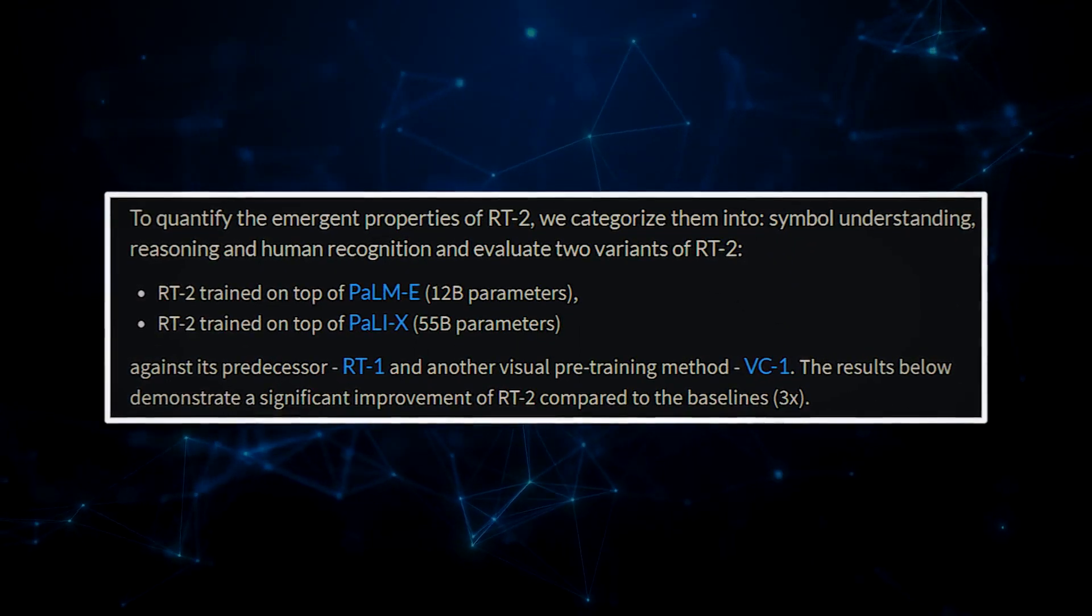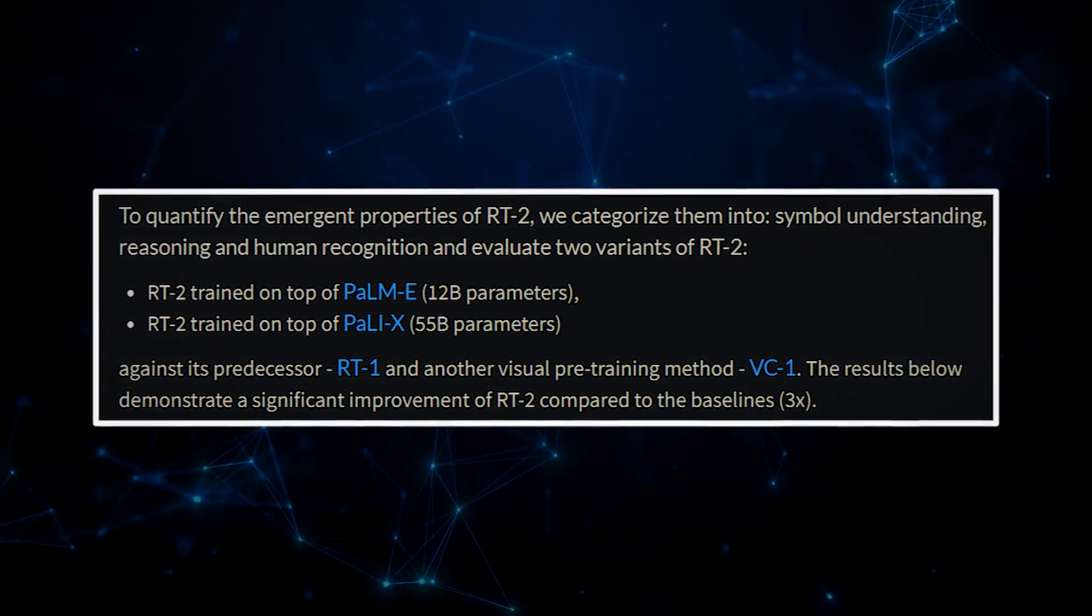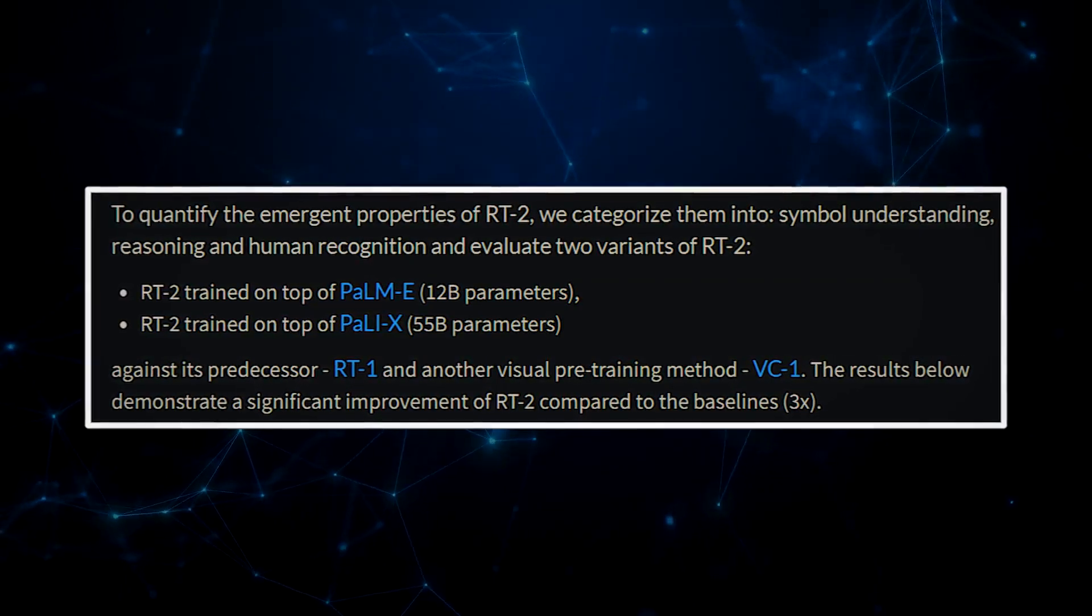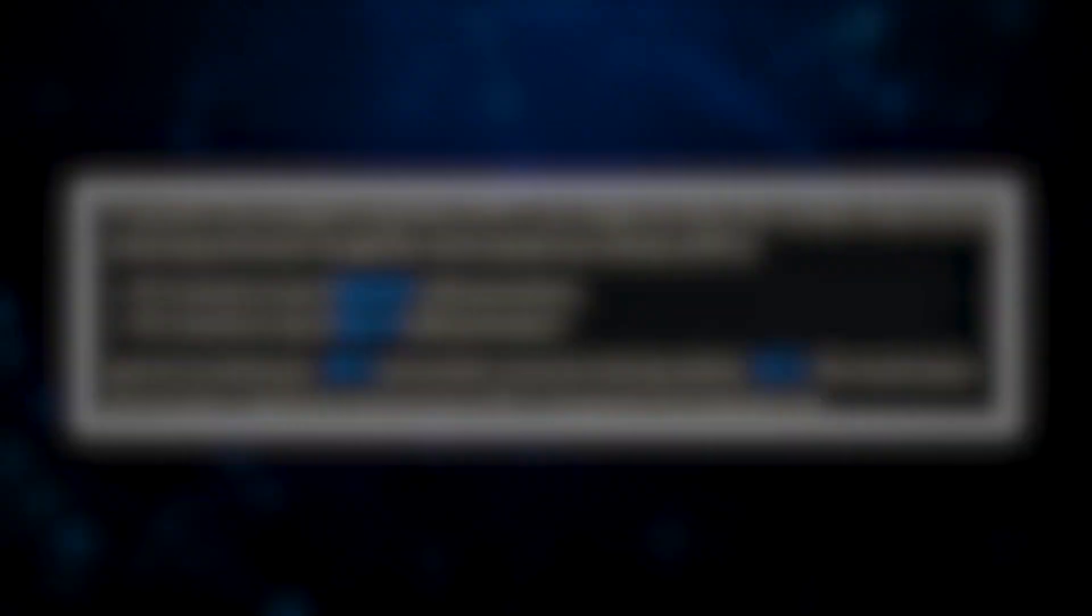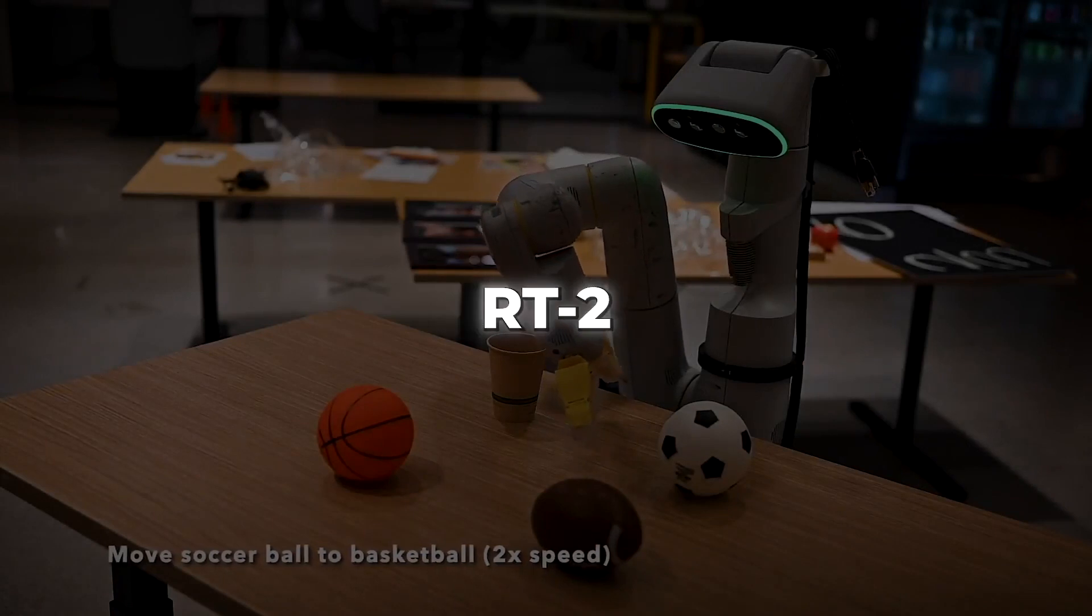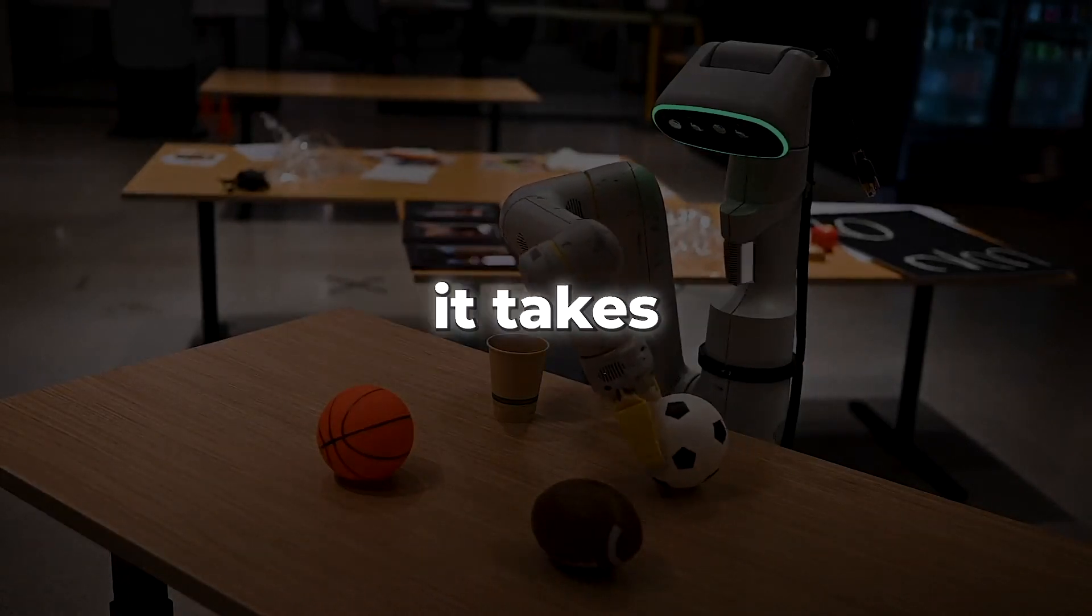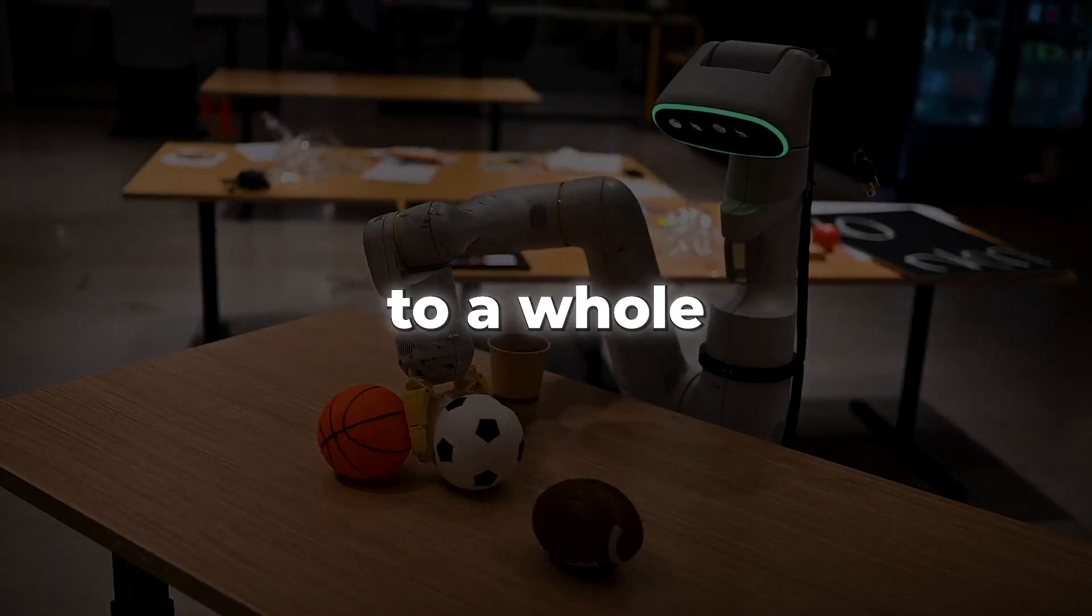The futuristic wonder brings together not one but two instantiations of VLAs, the powerful Palm-E and the genius Pali-X. But here's another real kicker, RT2 doesn't stop there, it takes the concept of generalization to a whole new level.